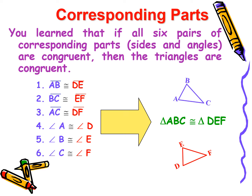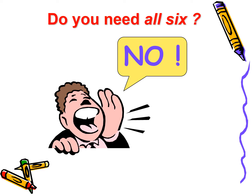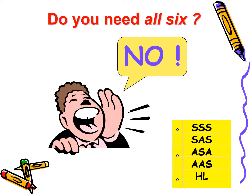Therefore, we can conclude that triangle ABC is congruent to triangle DEF. But today, I will explain three theorems or postulates that will prove two triangles are congruent using at most three corresponding parts. So, do you need all six? It's a big no. Today, we are going to talk about SSS, SAS, ASA, AAS, and HL.